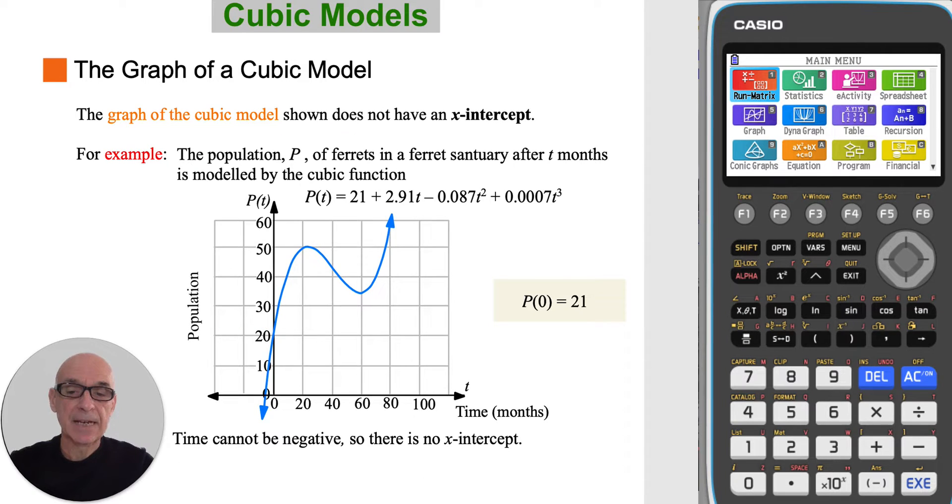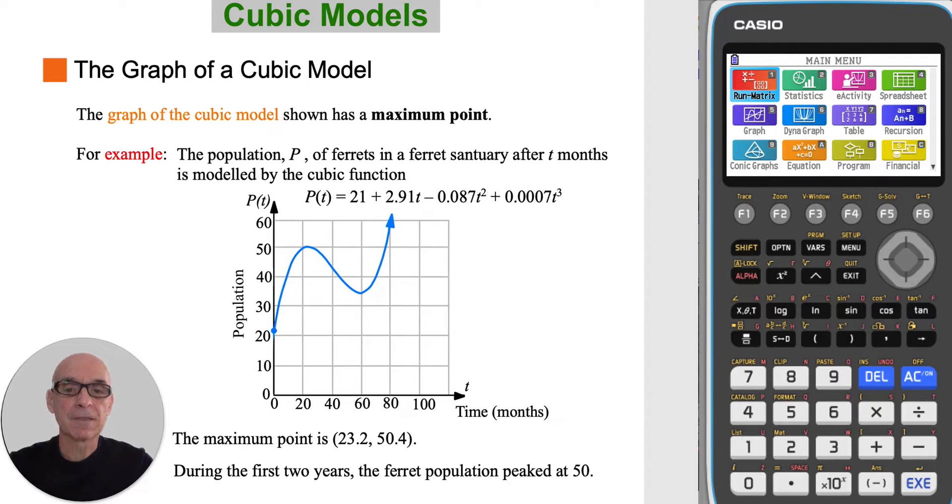As time cannot be negative, there is no x-intercept. The graph has a maximum point at the point shown. So during the first two years, the ferret population peaked at 50.